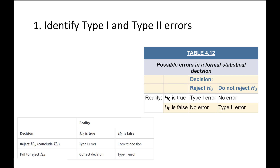Here's the table from your textbook. You can see that here they put the decision in the columns and reality in the rows. Sometimes you'll see these going in different directions. If you Google type 1 and type 2 error, you'll find a bunch of other tables, and some of them will flip the order of the rows or columns. You always need to pay attention to the labels to make sure you're interpreting the table correctly.